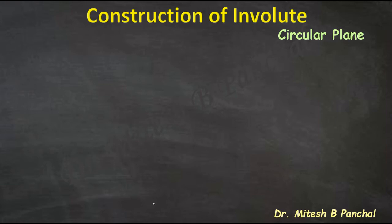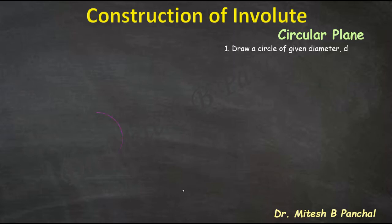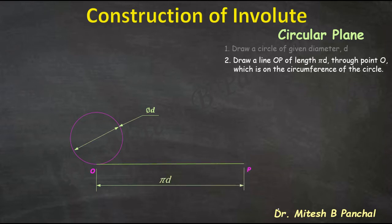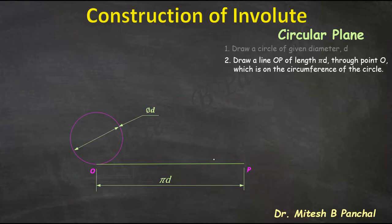The problem is considered as the winding of a string around a circular plane. For the construction, first we will draw a circle of diameter D. Then we will draw a line O-P of length π × D, which is equal to the circumference of the circle, through point O which is on the circumference of the circle. Line O-P is nothing but the string. Initially the string is kept tight, and point P, which is the free end of the string, is considered to trace out the involute curve.